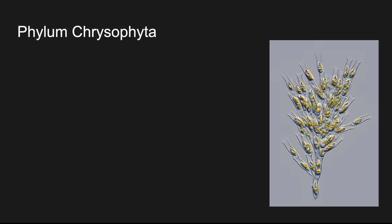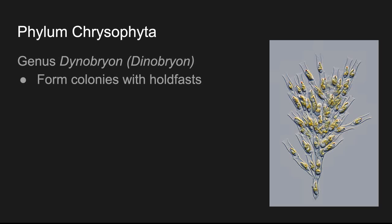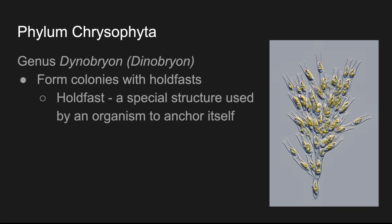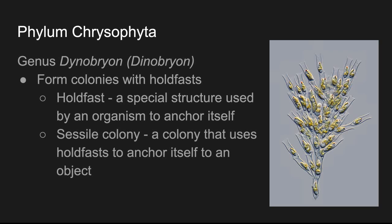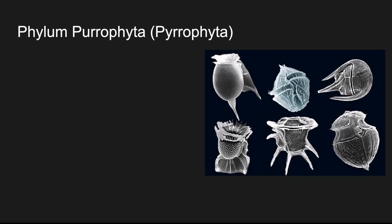There are some more out of phylum Chrysophyta. Here's genus Denobrian. They form colonies with holdfasts — that's a cellular structure that allows cells to anchor to surfaces or other cells, a special structure used by an organism to anchor itself. A sessile colony is a colony that uses holdfasts to anchor itself to an object. So that picture on the right — all those Denobrians would be a sessile colony because they're all anchored to each other with holdfasts.